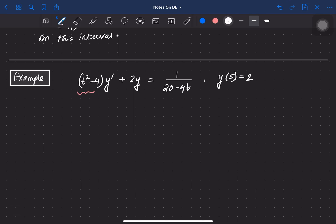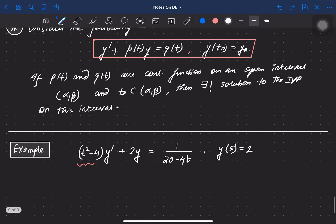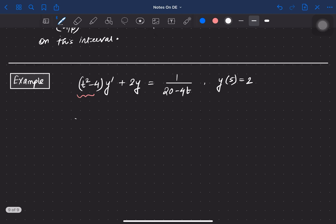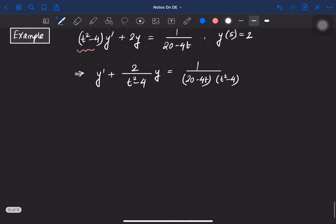and divide the whole differential equation, because in the form of the differential equation we don't have anything in the coefficient of y'. So I am dividing. This is the same as y' + 2/(t² - 4)·y = 1/((20 - 4t)(t² - 4)). Now t² - 4 is in the denominator. Let us find those